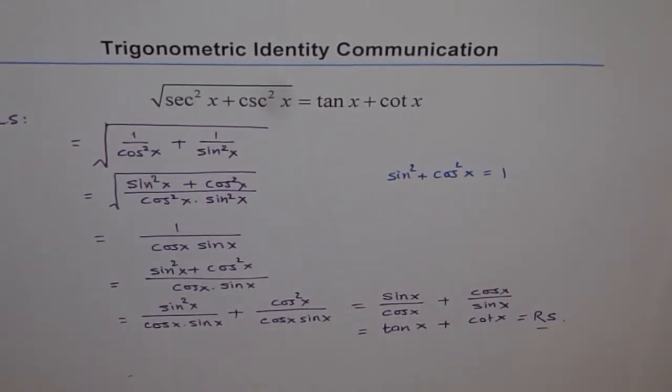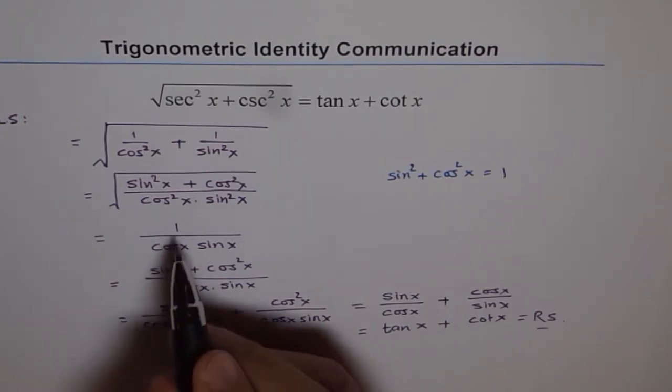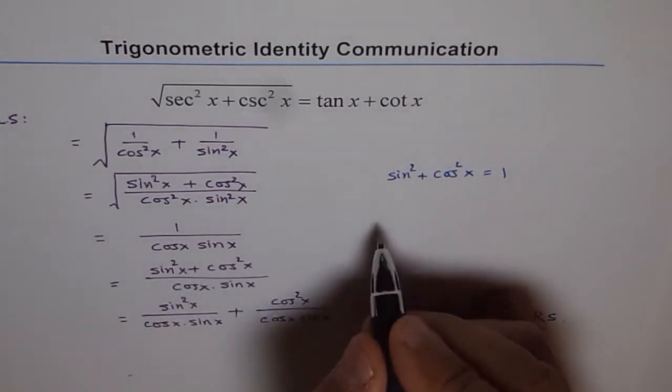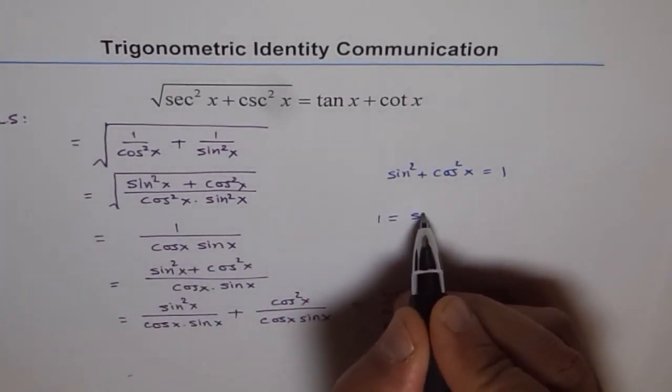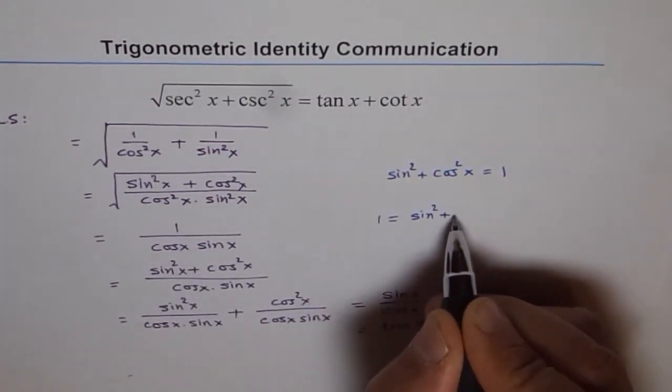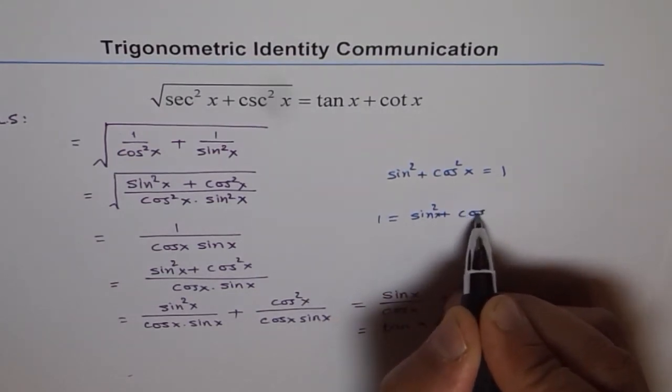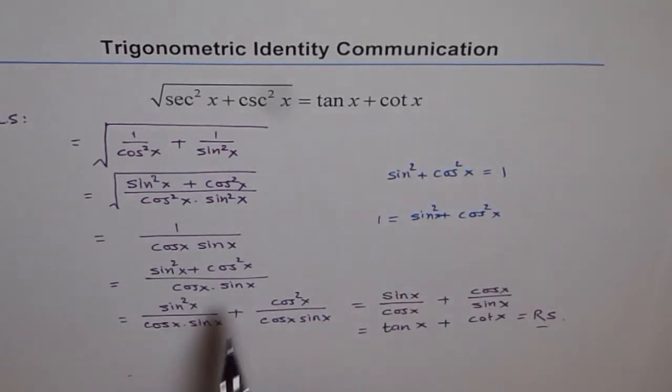So we proved that left side is equal to right side and therefore the identity is correct. Now this question is a part of communication. Therefore, in every step, you should write down what you did. For example, we wrote 1 as equal to sin square x plus cos square x, and then we wrote it separately and then cancelled out to get the result. Thank you.